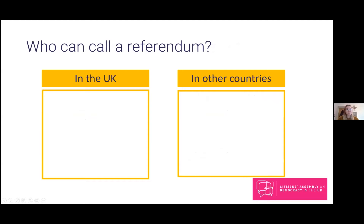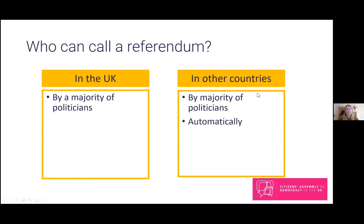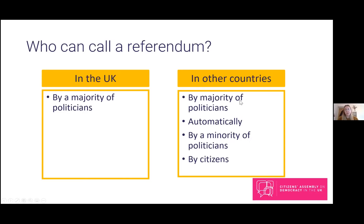Who can call a referendum? In the UK, referendums can only be held if a majority of politicians in Parliament vote to hold one, which means they usually have the support of the government. In other countries, referendums sometimes happen automatically — for example, if politicians try to change the constitution, that requires public approval. In some countries, a minority of politicians — say a third or quarter of the legislature — can call a referendum, and in places like Italy, Switzerland, and New Zealand, citizens can call a referendum if enough people sign a petition.